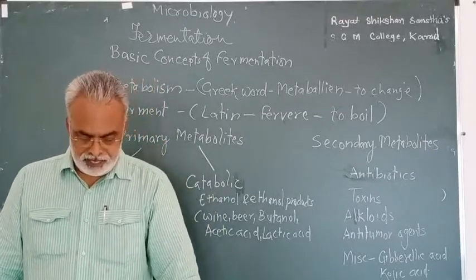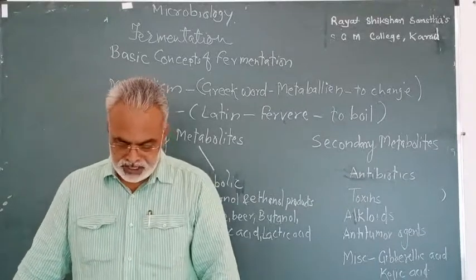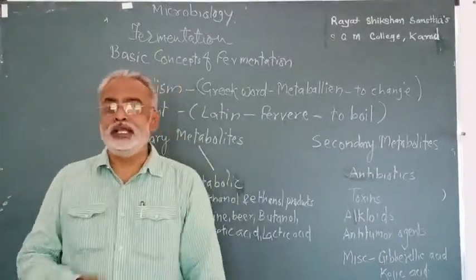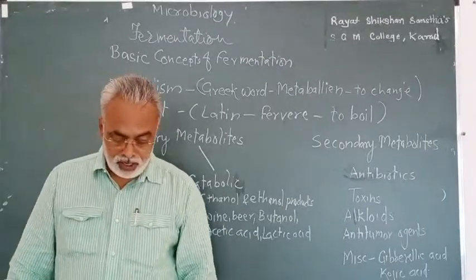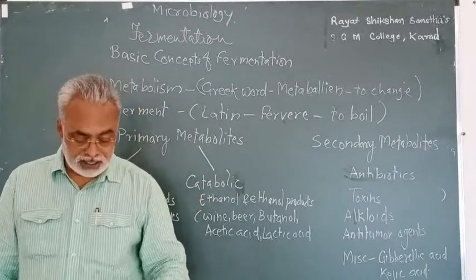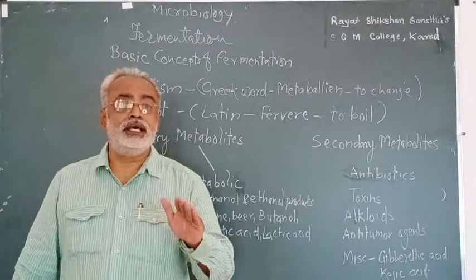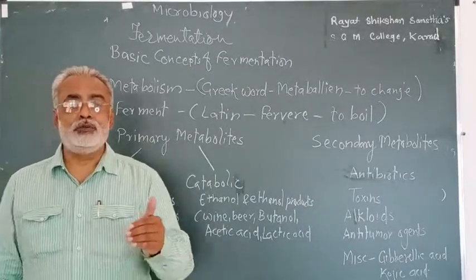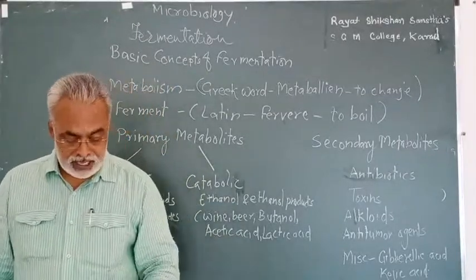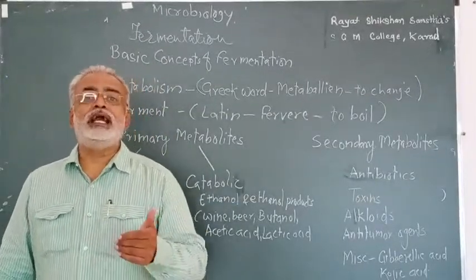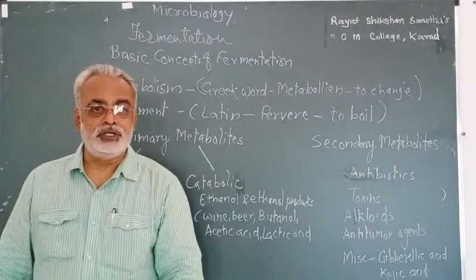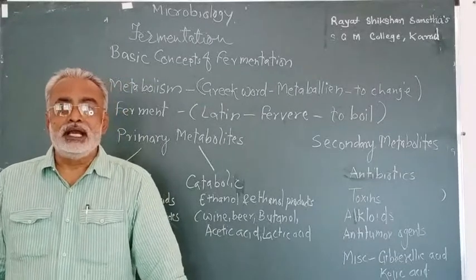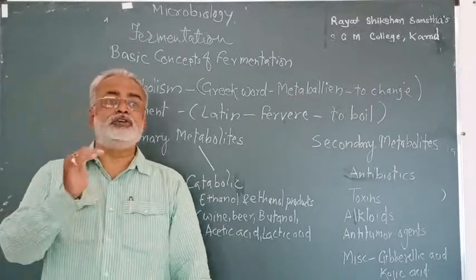Yeast cells, when they act on fruit juices particularly in anaerobic conditions, utilize sugars. They utilize sugar for obtaining energy, because energy is required for their growth, reproduction, and metabolic activities. When these sugars are utilized for energy production, there is a formation of ethyl alcohol and carbon dioxide, and the carbon dioxide produced leads to the bubbling action in the fruit juice. Therefore, the concept of fermentation was established on the basis of these observations.